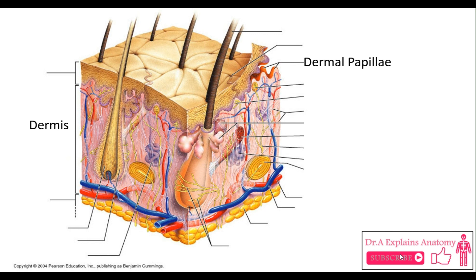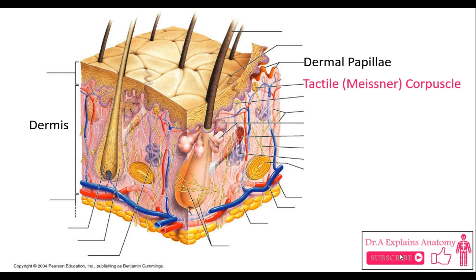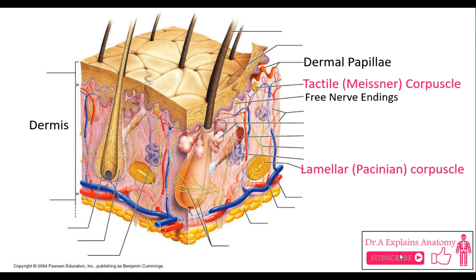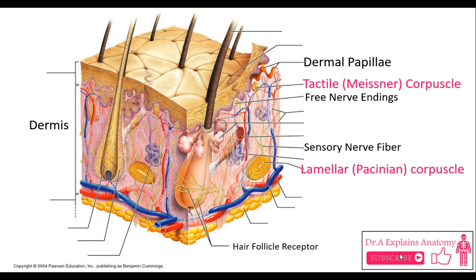Let's go over the nervous tissue structures in the dermis. First, we have a tactile Meissner corpuscle. This is a lamellar Pacinian corpuscle. Notice the difference in size and location between the two. These are free nerve endings. This is a sensory nerve fiber. And this is a hair follicle receptor.